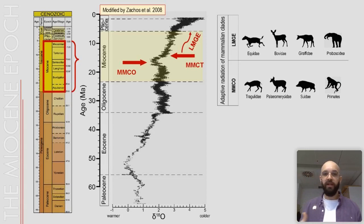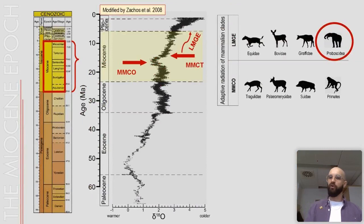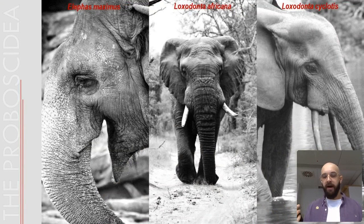This transition continued until the end of the epoch, triggering the so-called late Miocene grassland expansion. According to the fossil record, these climatic shifts played a very important role in the diversification of mammalian communities. During the mid-Miocene climatic optimum we had the adaptive radiation of families such as tragulids, palaeomerycids, suids, and primates, while during the late Miocene grassland expansion we have the adaptive radiation of equids, bovids, giraffids, and proboscidians — the group my presentation will focus on.